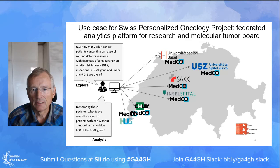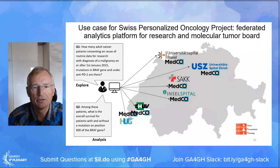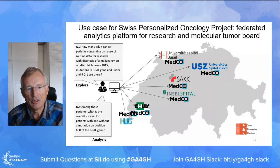This is an example of application in the Swiss landscape. First question: how many adult cancer patients consenting with a given profile are available as an exploration? And then question two: among these patients, what is the survival for patients with and without mutation?